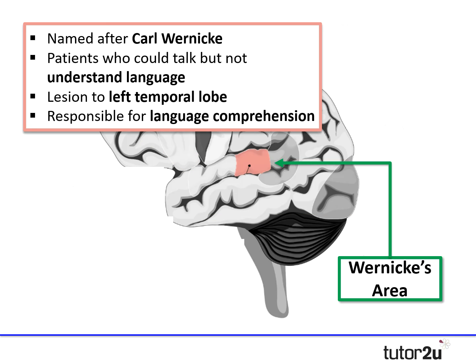At roughly the same time, scientist Carl Wernicke discovered a group of patients who could talk but couldn't comprehend or understand language. He found damage to the left temporal lobe in their brains, leading him to conclude that this area is responsible for understanding and comprehending language. So you've got two areas working together — Broca's area to produce language, and Wernicke's area to understand and comprehend language.